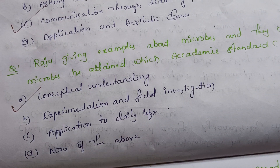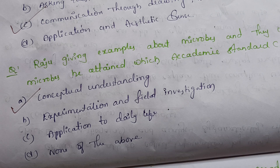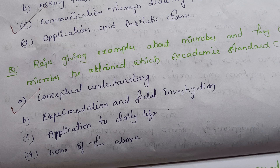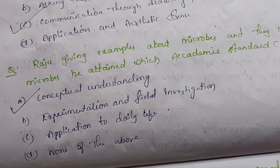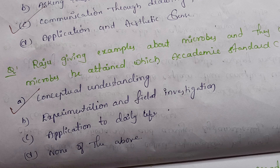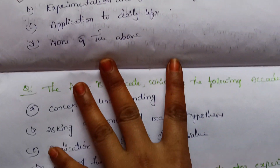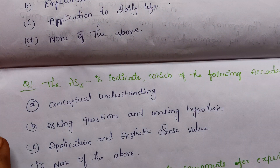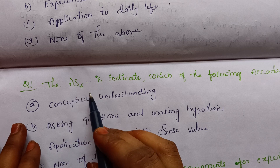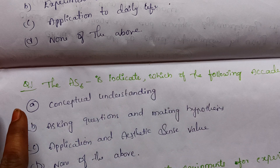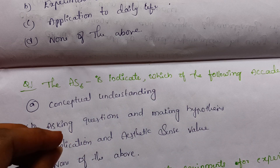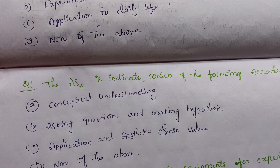Raju is attaining conceptual understanding, because giving examples, comparison, and differentiation are specifications of conceptual understanding. The next question: Academic standard AS6 is indicating which of the following? Options: A — conceptual understanding, B — asking questions and making hypothesis.